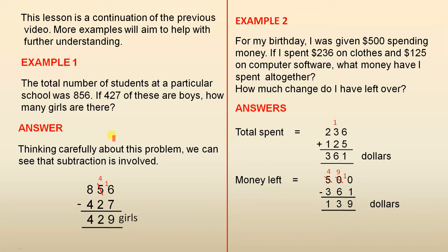So the answer here, thinking carefully about this problem, we can see that subtraction is involved. So we have 856 minus 427, and we have all the working here. I've shown all the trading that we saw in earlier videos, so we have 429 girls. And you can pause the video at any time just to have a look at this more carefully.